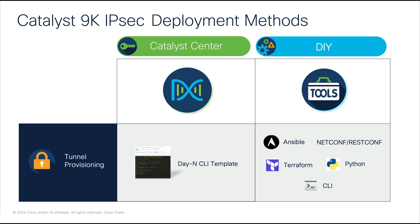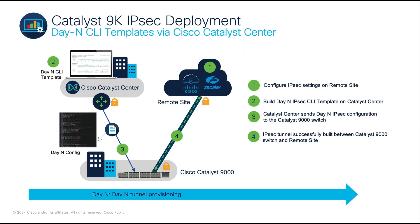This allows users more flexibility in configuring IPsec according to their specific requirements. For a streamlined configuration of an IPsec tunnel, let's focus on the first approach where we leverage day-N CLI templates via Cisco Catalyst Center. Initiating the workflow involves configuring all relevant IPsec settings on the remote side as the first step. In the second step, ensure the switch responsible for building the IPsec tunnel is successfully onboarded on the Catalyst Center. Subsequently, the day-N CLI template needs to be created encompassing all the necessary IPsec settings that we will be going through in the demo. Once the template is built, proceed to step three to provision the switch with the template.